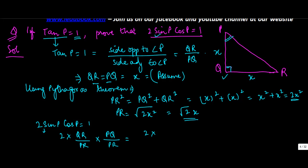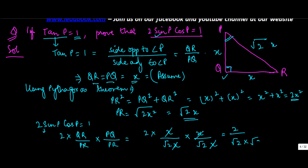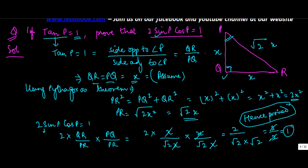We have QR and PQ both equal to X, and PR equal to root 2 X. Substituting: sin P is X over root 2X, and cos P is X over root 2X. So 2 sin P cos P equals 2 times (X over root 2X) times (X over root 2X), which simplifies to 2 upon root 2 times root 2, giving 2 upon 2, which equals 1. Hence proved.